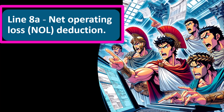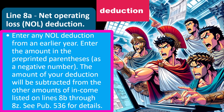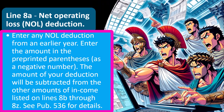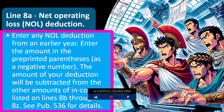Line 8A — Net Operating Loss (NOL) deduction. Enter any NOL deduction from an earlier year; enter the amount in the pre-printed parentheses as a negative number. The amount of your deduction will be subtracted from the other amounts of income listed on lines 8B through 8Z. See Publication 536 for details. Note that we're looking at income line items here, and now you're looking at something that says 'deduction.' It's kind of an above-the-line deduction — we're reducing income because we had a loss. The IRS is usually quite skeptical of losses.